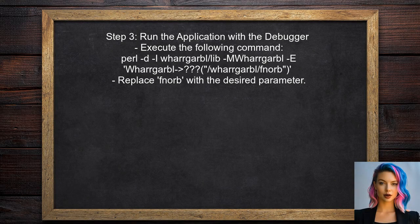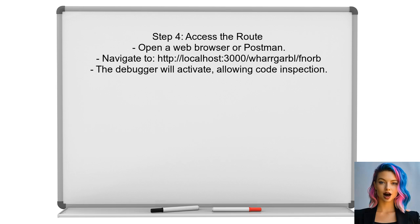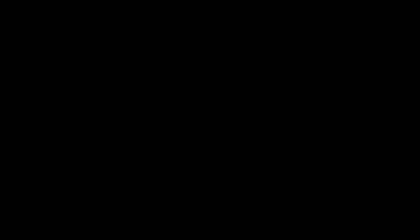Now, run the application with the Perl debugger by executing a specific command in the terminal that includes the necessary options. Finally, access the route in your web browser or a tool like Postman. This will trigger the debugger, allowing you to step through the code.